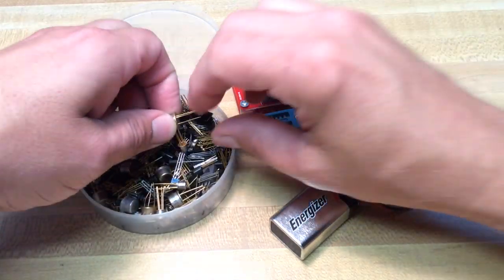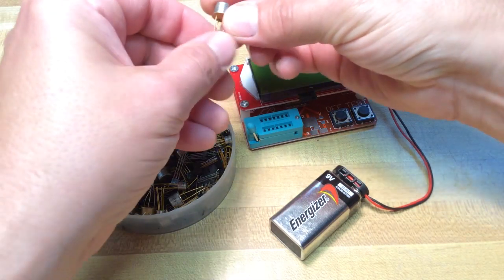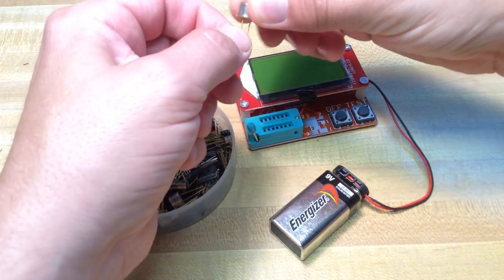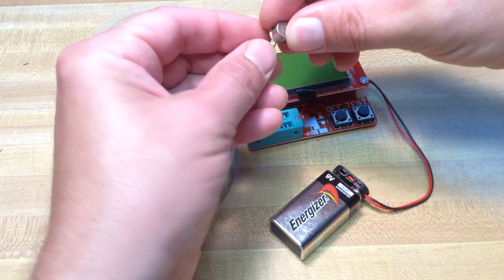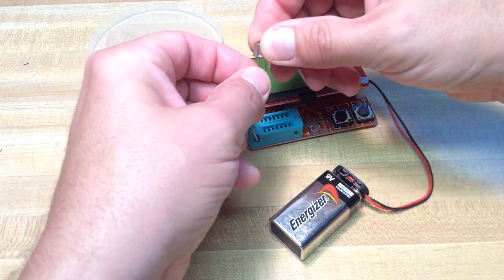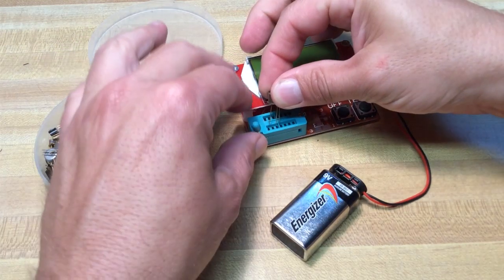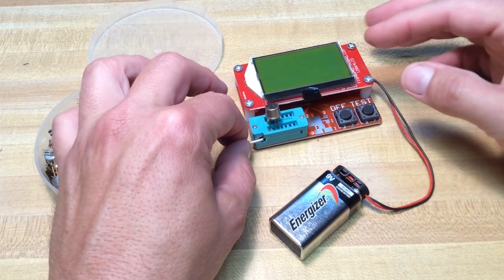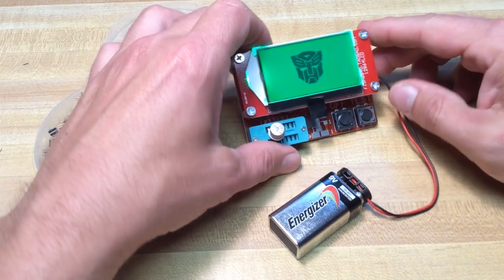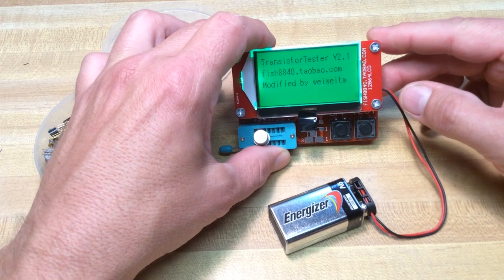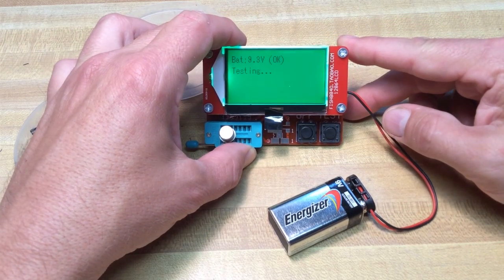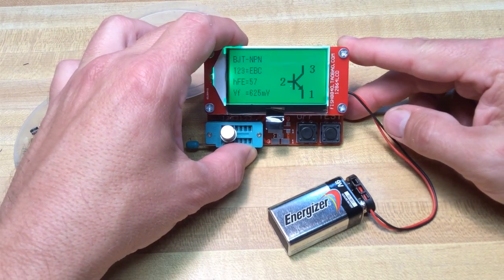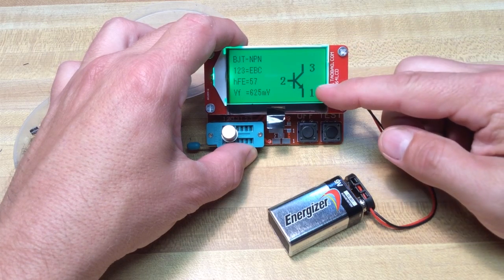So let's pick out another transistor here at random. See what we've got. We'll pick out one of these metal can devices. These are a little older here. I've had these around a long time. And I'm not even going to look at the writing on the transistor to see what it is. We'll just test it out here. And did I mention the battery does not come with this device. You have to supply your own nine volt battery. There it shows me.